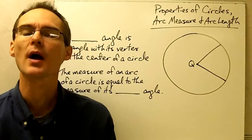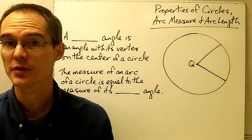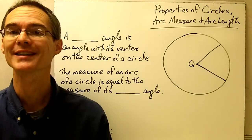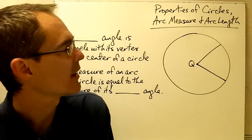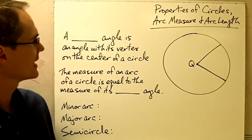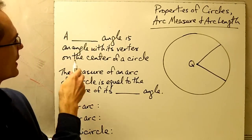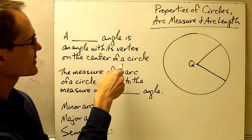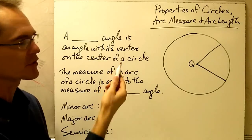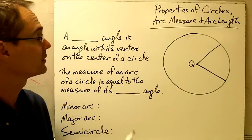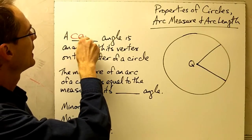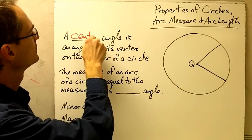In this video we're going to talk about two properties of circles called arc measure and arc length. In previous lessons, we have learned that an angle with its vertex on the center of a circle is called a central angle.